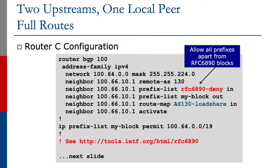We've asked AS130 to send us the full BGP table. The full BGP table doesn't mean accept anything coming from the upstream — we should filter what we hear from them to allow all prefixes apart from special use and non-routable prefixes. The example shows IPv4, and there's a similar set for an IPv6 full route BGP session.